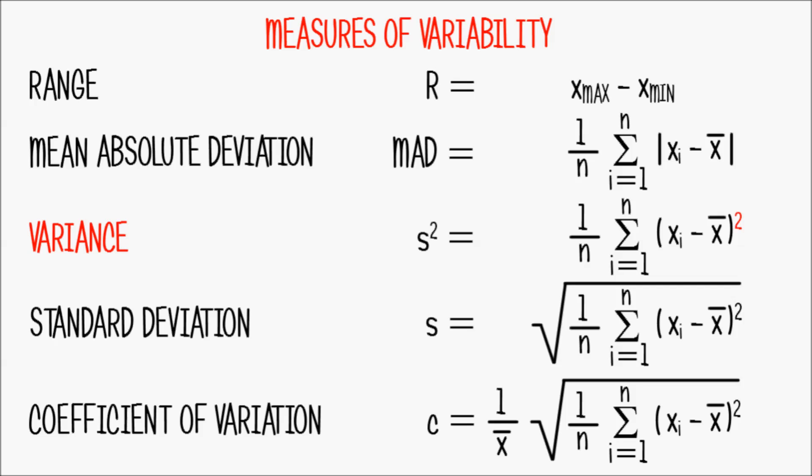Variance almost the same thing just using a square instead of absolute values. The standard deviation which takes the square root of the variance. And the coefficient of variation which is the standard deviation put into relation to the data set's arithmetic mean.